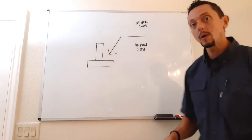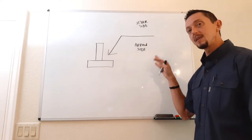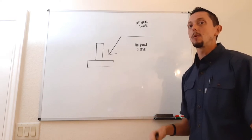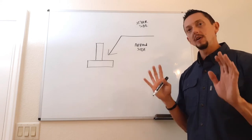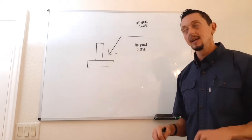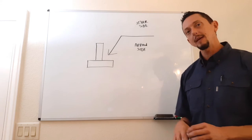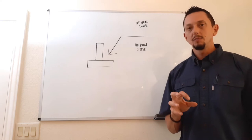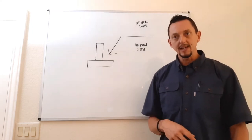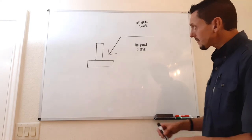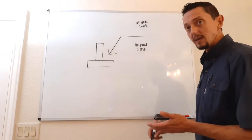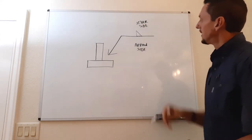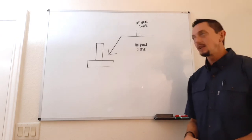Always start with the reference line — determine the type of weld and the side significance. Always slow yourself down and make sure you know the side significance before continuing, because sometimes we look at a weld symbol and make a snap judgment. That's how mistakes happen. A fillet weld symbol looks like a triangle — it looks just like a fillet weld.